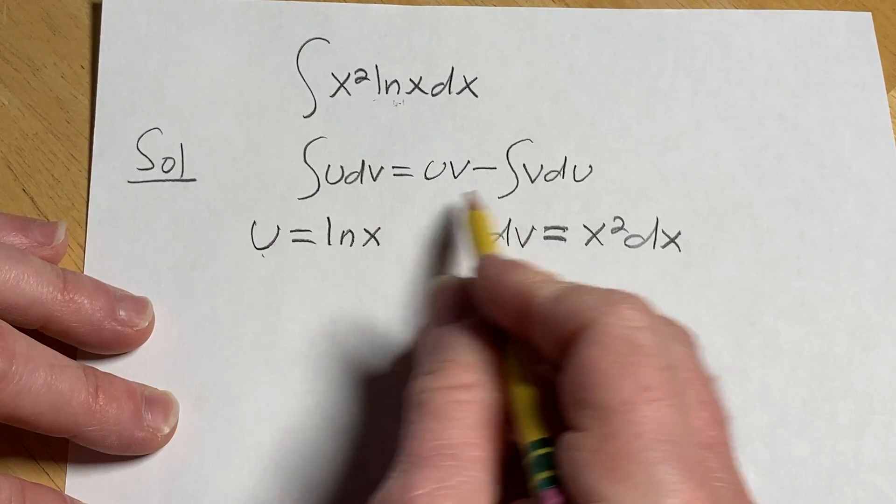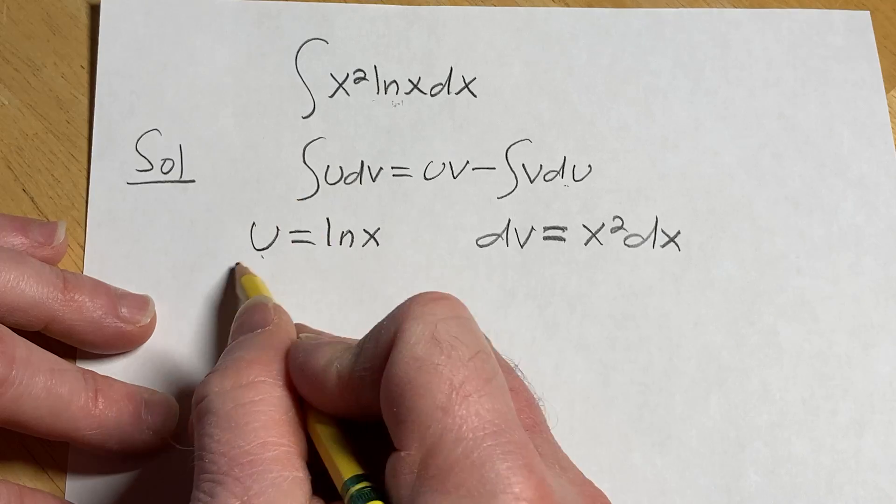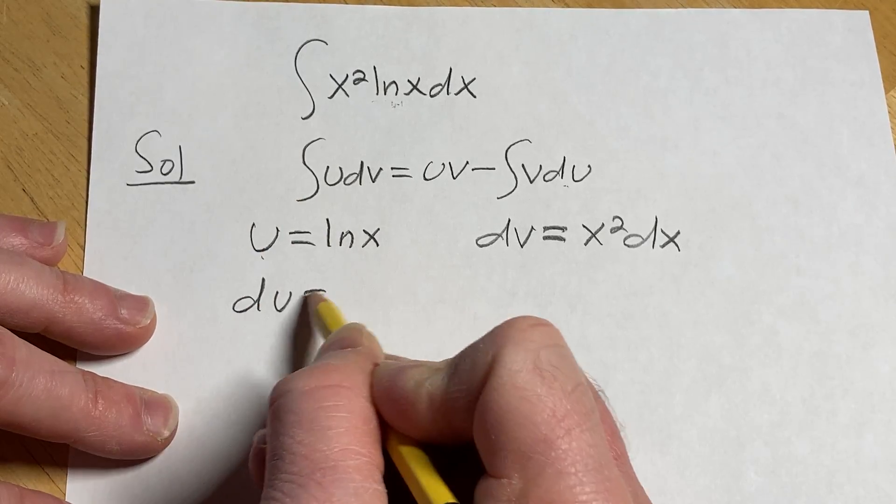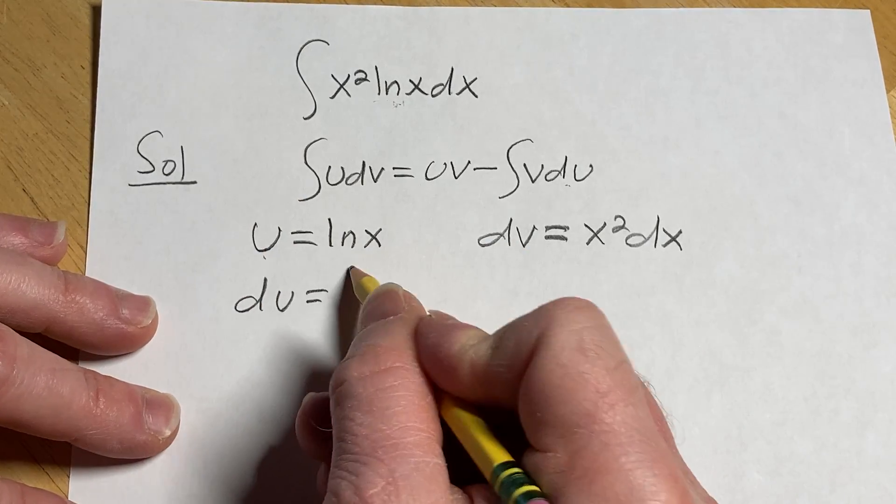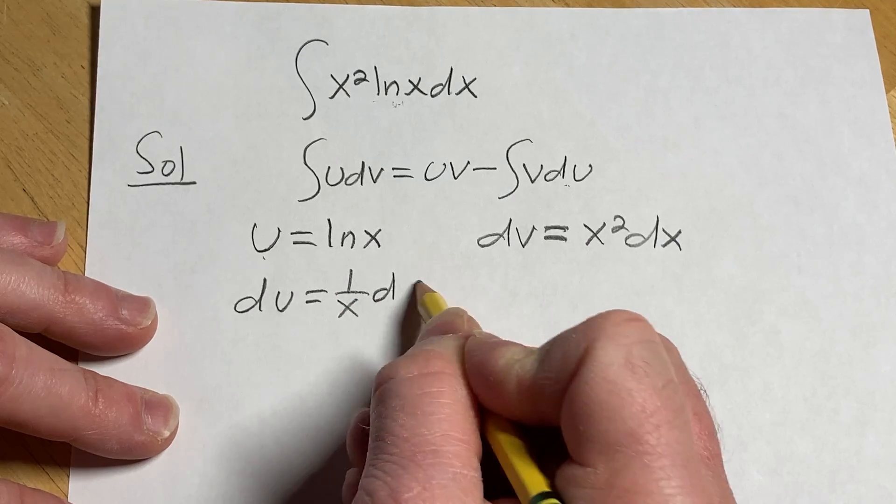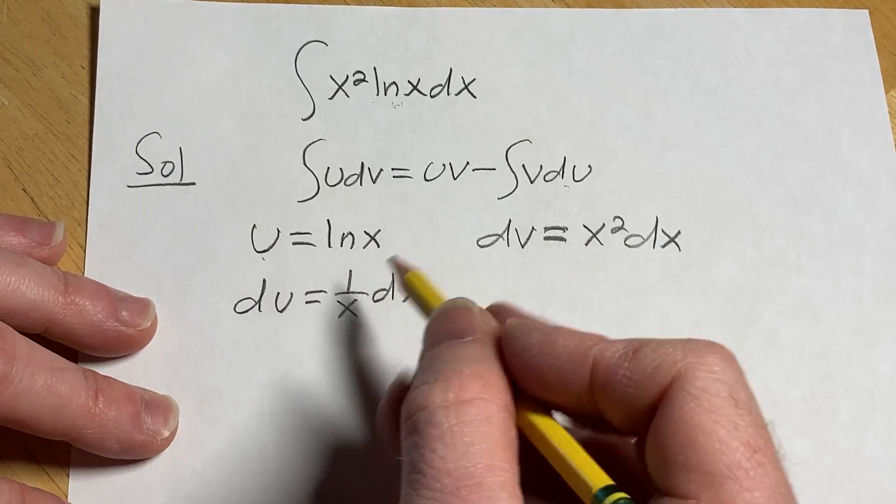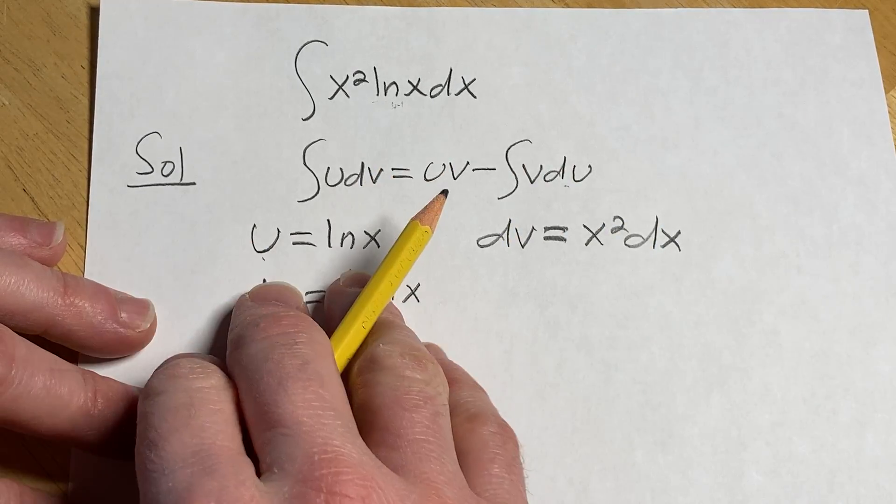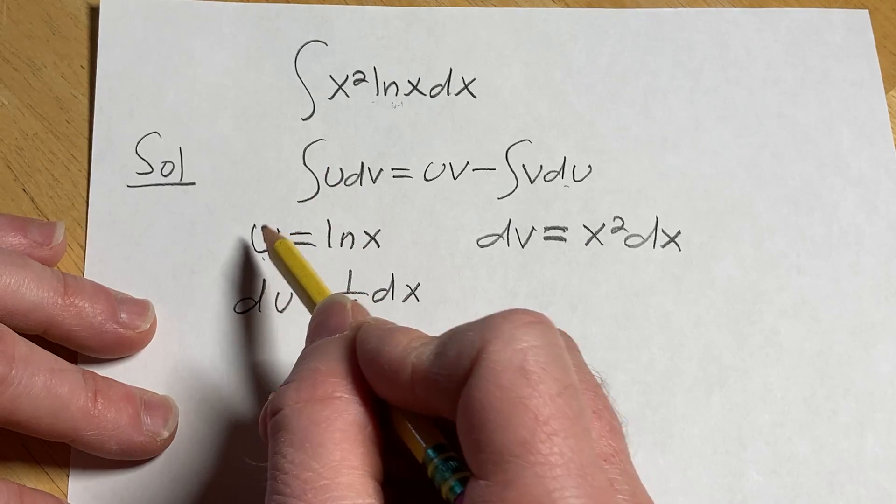The derivative now is dU which we need to find for the formula. The derivative of ln x is 1 over x, and then don't forget to write the dx. We're using what's called differential notation here when we differentiate, so when we find the derivative of U we simply write dU.